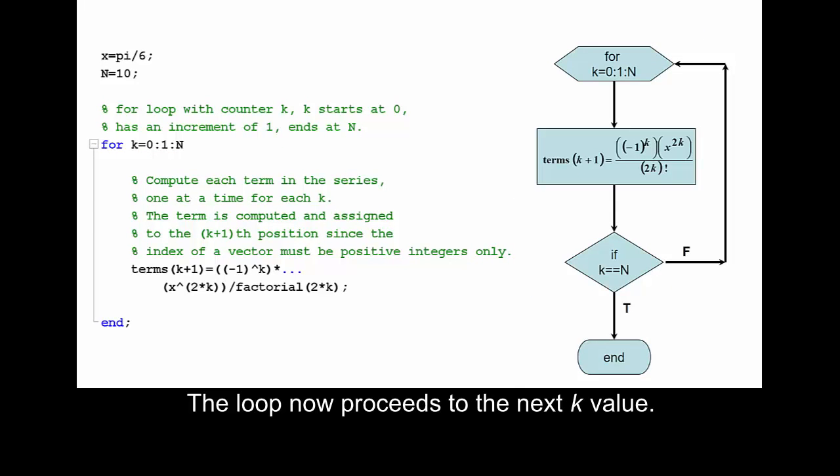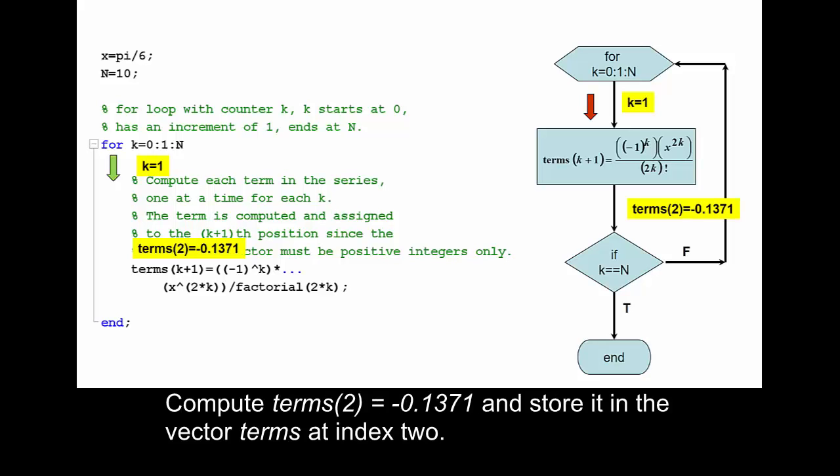The loop now proceeds to the next k value. For the next iteration, k equals 1. Compute terms(2) = -0.1371 and store it in the vector terms at index 2.